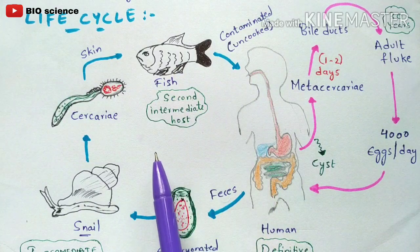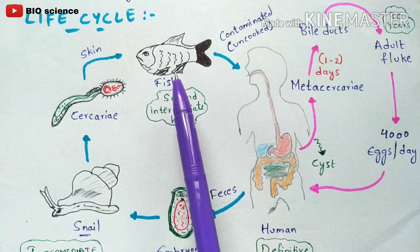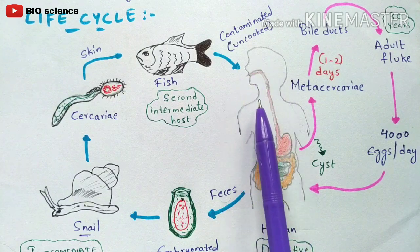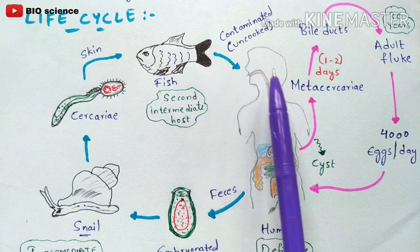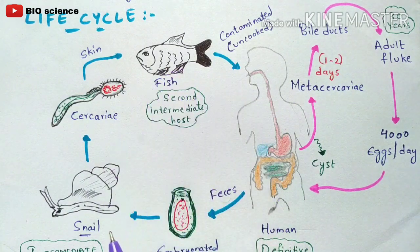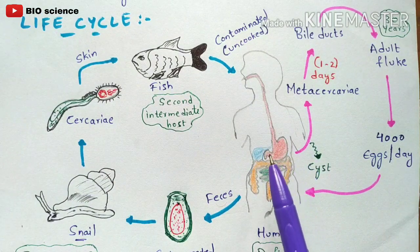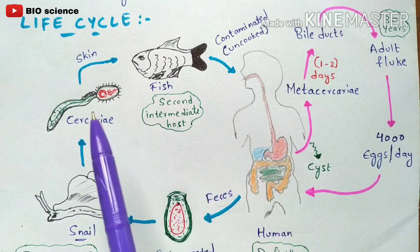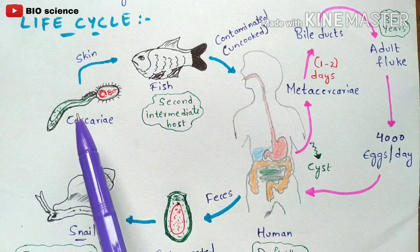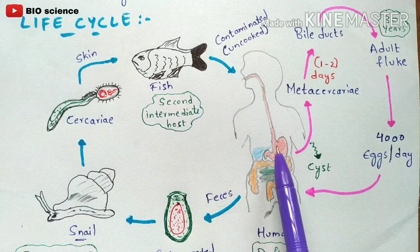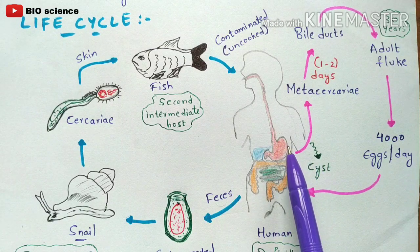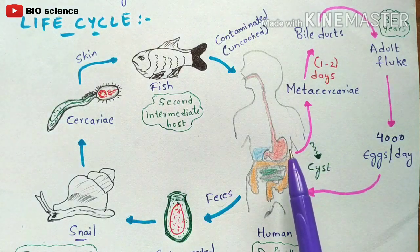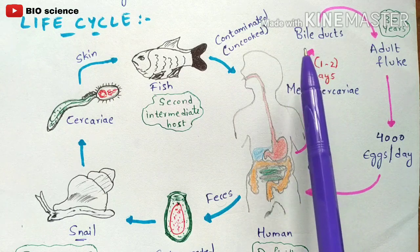Human beings consume these fish, and if the fish is not cooked properly, the cercariae enter the human's stomach. Once in the stomach, the cercariae — which are enclosed in a cyst wall — encounter gastric juices that are acidic in nature. The cyst wall gets ruptured, and the cercariae are released, then developing into metacercariae. Within one to two days, the metacercariae migrate and enter the bile ducts of the liver.